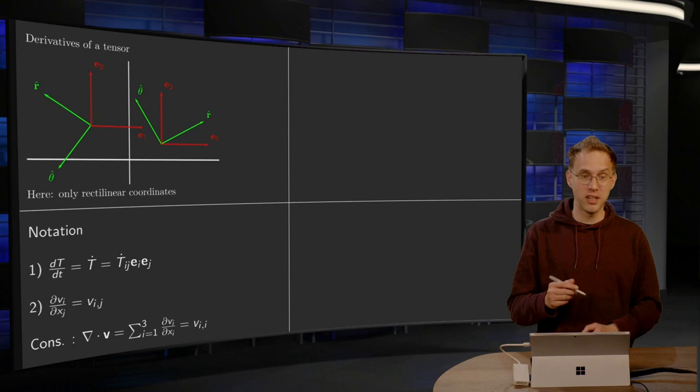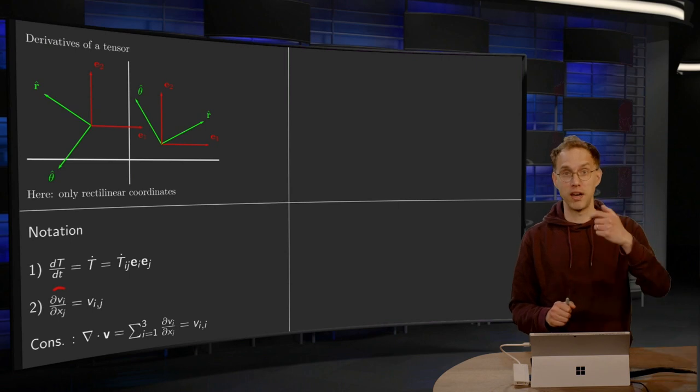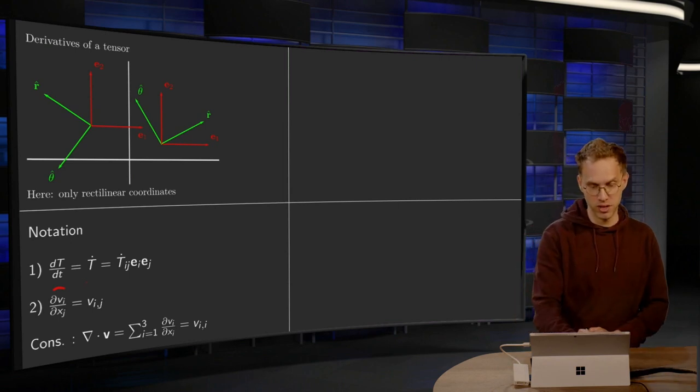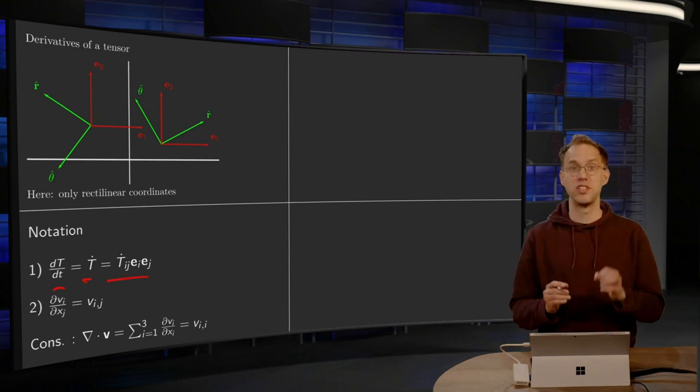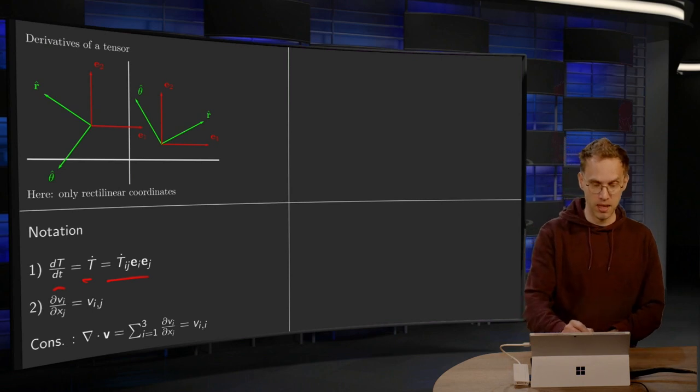So, some notation. If you take for example the time derivative of a tensor, dT/dt, denoted by an over dot, so T dot, you can just do so by differentiating its components, T_ij dot times e_i, e_j, because those basis vectors are constant.